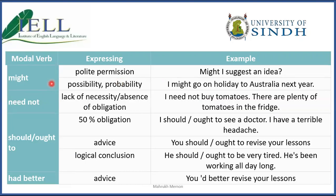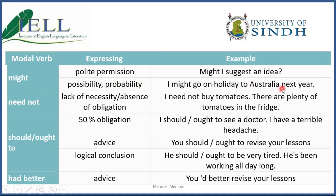Moving on, we have 'might.' Might is used for polite expression of permission — it's more polite and more formal in nature. Might is also used for possibility and probability: 'I might go on holiday to Australia next year' — it's a possibility I'm planning, a probability. So for possibility and probability, we use 'might.'